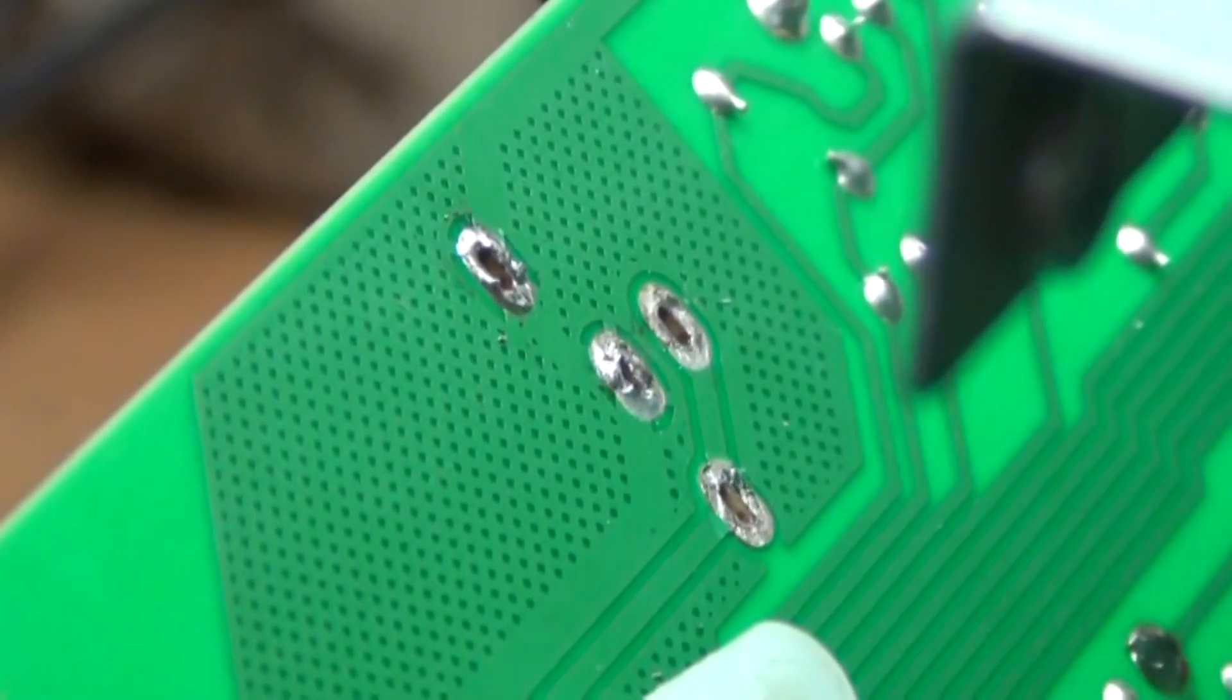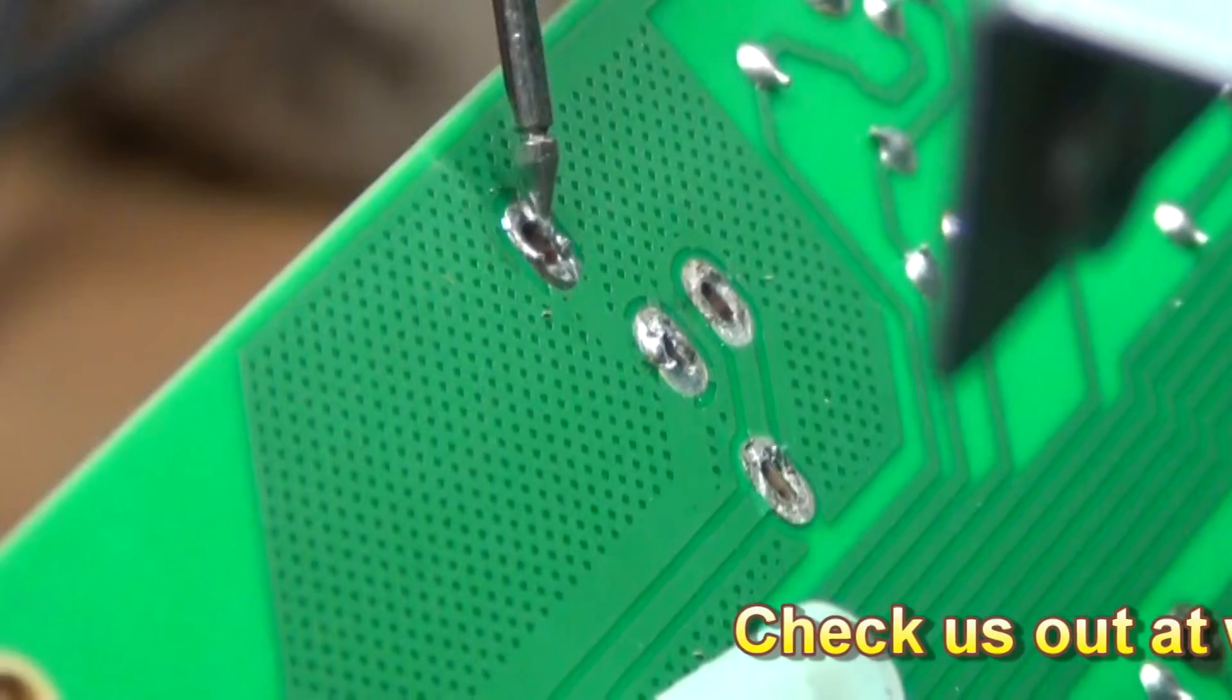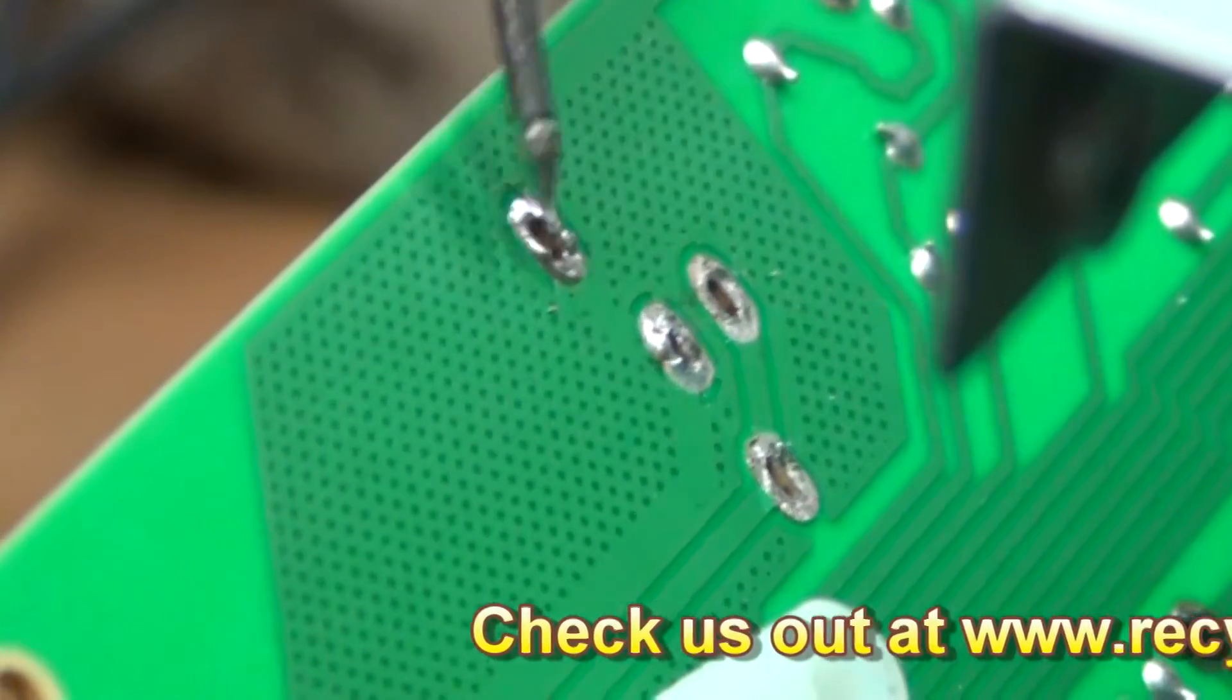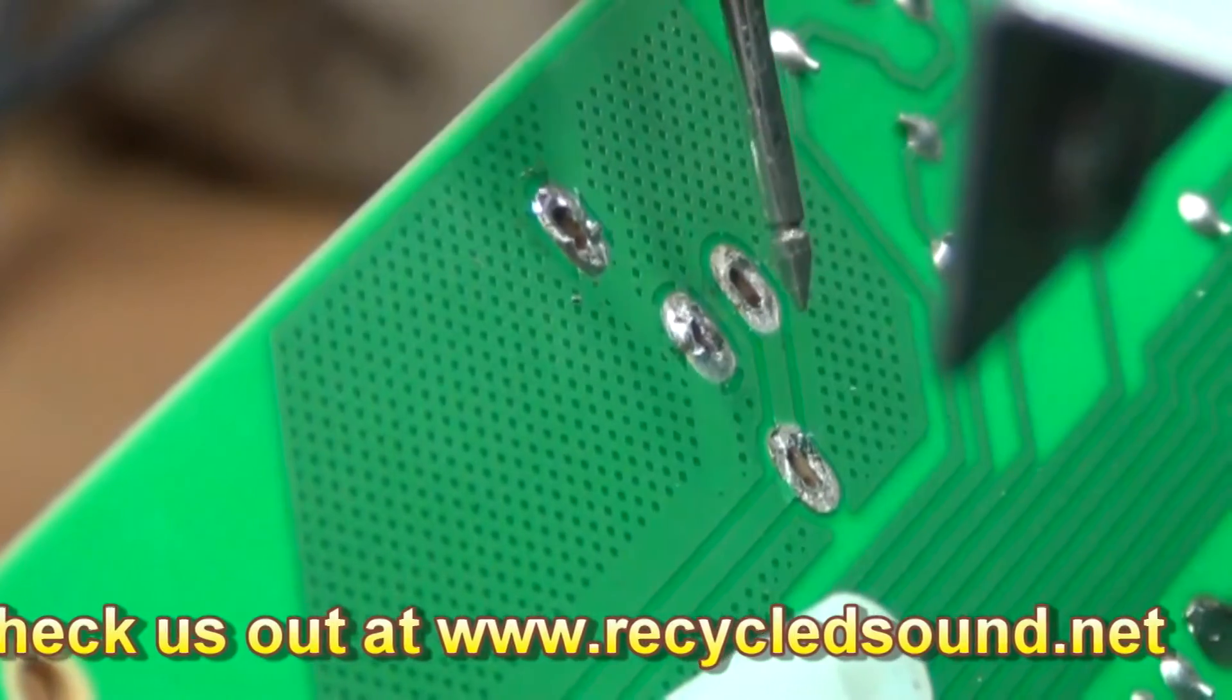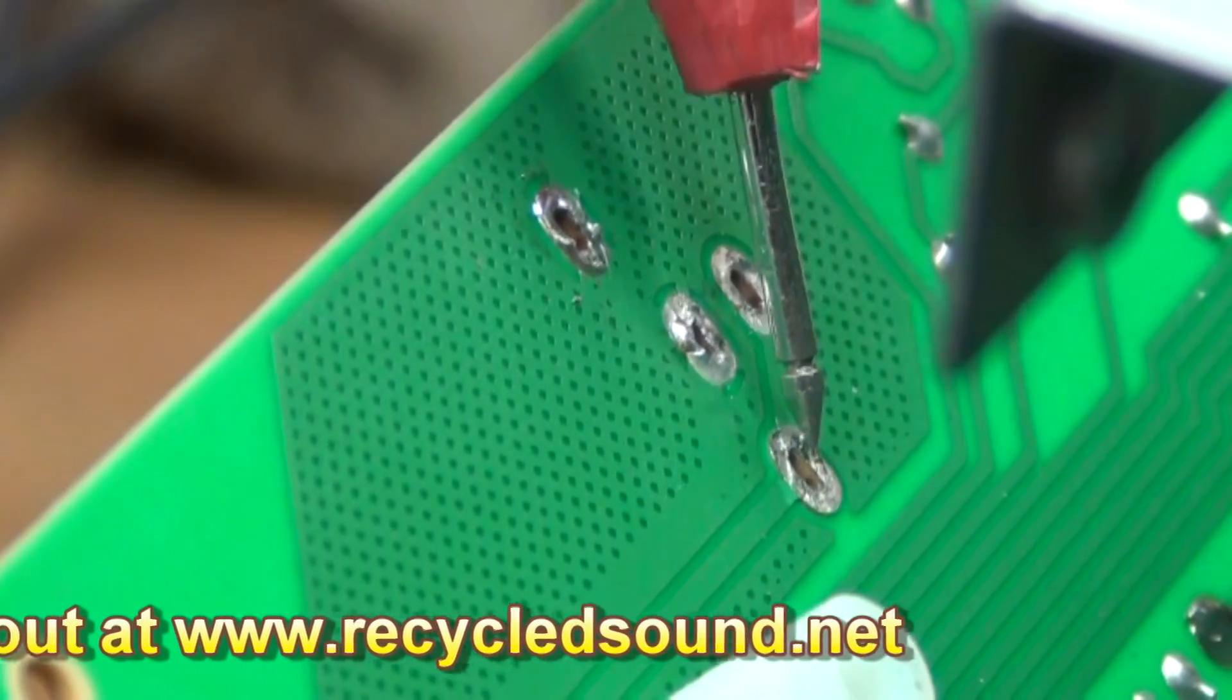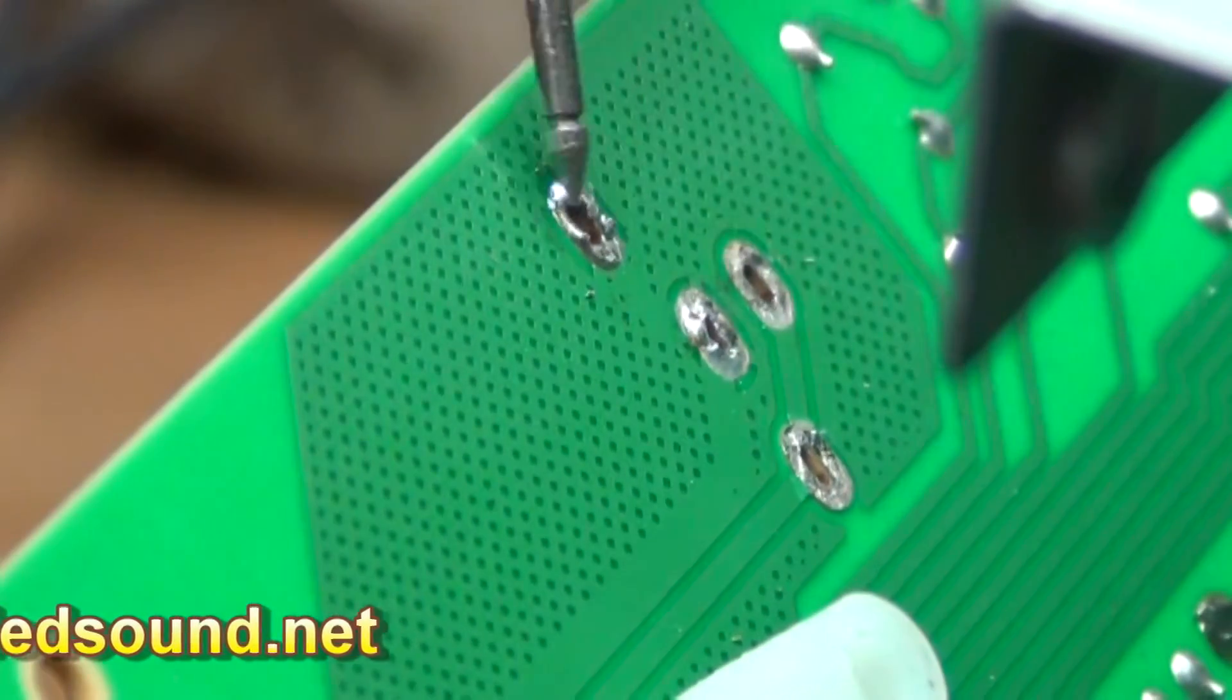And if we transfer that to the board, we've got the main ground still, the switching portions, and the hot. So we're going to put our jumper wires in those positions.